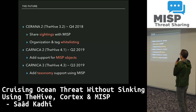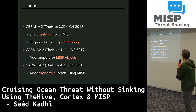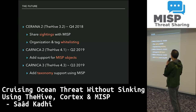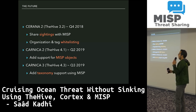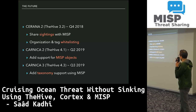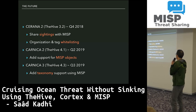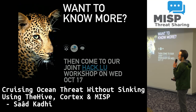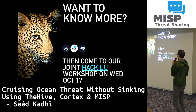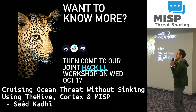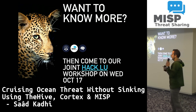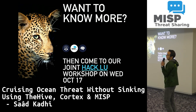Looking at the roadmap: in Q4 of this year we are going to add sightings sharing — TheHive supports sightings and will share them to MISP — along with organization and tag whitelisting. In Carnica 2, which is the code name for TheHive 4, we will add support for MISP objects, and we are likely migrating from Elasticsearch to a GraphDB to support new functionality and MISP objects. Next year we will also add taxonomy support using MISP. On Wednesday there will be a joint workshop here — you're welcome to step in if you'd like to know more.